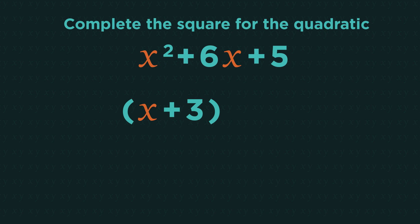So in this video, we're going to look at how to complete the square. Let's have a look at an example. We take half of the x term and put it into our bracket with x. So half of 6 is 3.